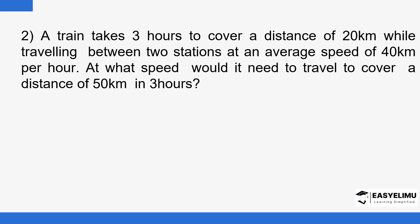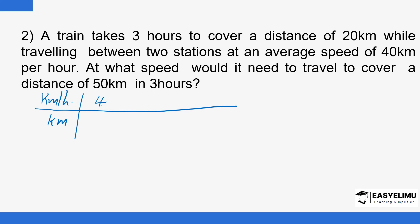Now the second example: a train takes 3 hours to cover a distance of 20 kilometers while traveling between two stations at an average speed of 40 kilometers per hour. At what speed would it need to travel to cover a distance of 50 kilometers in the same 3 hours? Speed is now changing proportionately. Speed is changing from 40 kilometers per hour to some unknown value m, and distance is changing from 20 to 50 kilometers.